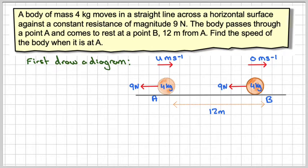We're going to find the speed of the body using energy. So energy at A will be kinetic energy, which we get from half mv squared. So it will be a half times 4 times u squared. It's going to let u, because u stands for initial velocity.